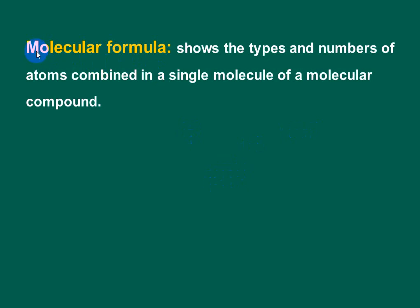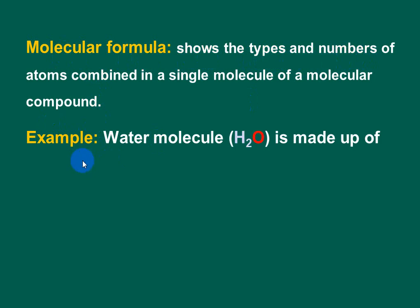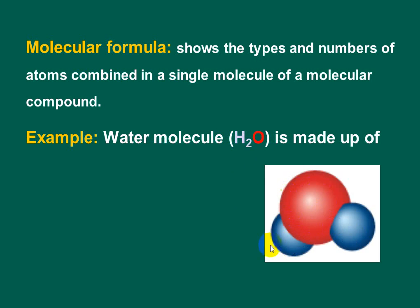Molecular formula: the molecular formula is the formula used for molecular compounds. It shows the types and numbers of atoms combined in a single molecule of a molecular compound — which atoms and how many. For example, water H2O contains hydrogen and oxygen. The number of hydrogen atoms is two and the number of oxygen atoms is one, so the molecular formula is H2O.